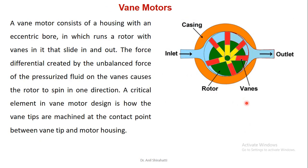Next is the vane motor. A vane motor consists of a housing with an eccentric bore — the bore is not exactly at the center of the casing — in which runs a rotor with vanes that slide in and out. The force differential created by unbalanced forces of the pressurized fluid on the vanes causes the rotor to spin in one direction. The critical element is the vane design, which determines the point of contact between the vane tip and the motor housing. As it is eccentric, when it starts rotating, differential pressure develops, driving flow between the inlet and the outlet.